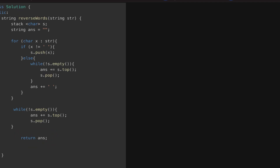The time complexity is O(n²) because the outer loop is O(n) and in the worst case the longest word could also be of size n. The space complexity is O(n) because we are creating extra space for the stack. I hope you understood this solution. If you are looking for more problems, do subscribe to Runtime Error.